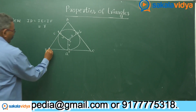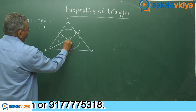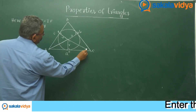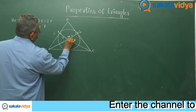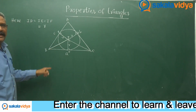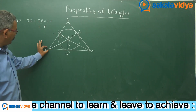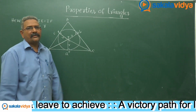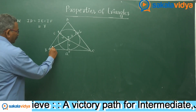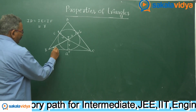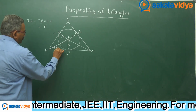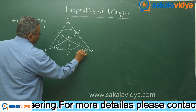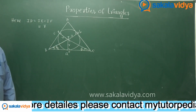Let us join BI and also CI. BI is the angular bisector of angle B, and CI is the angular bisector of angle C. That means we can say this angle is B by 2, and this angle is C by 2.